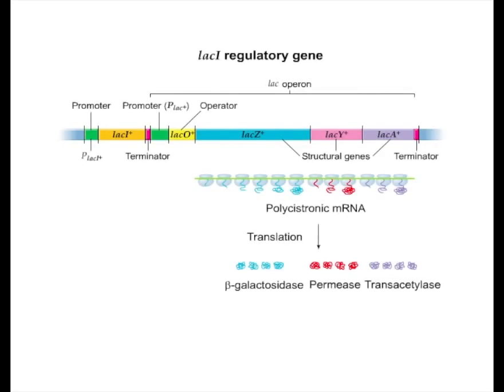The regulatory gene lacI produces an mRNA from which is synthesized a repressor protein that can bind to the operator of the lac operon. The general term for the product of a regulatory gene is a regulatory protein.